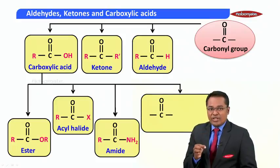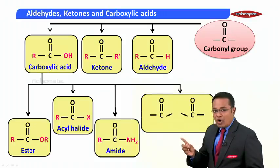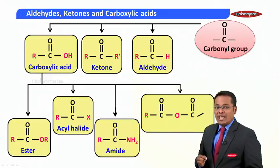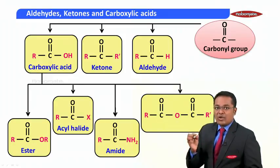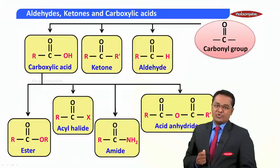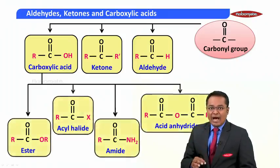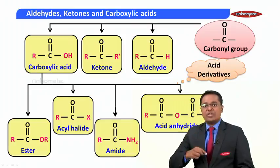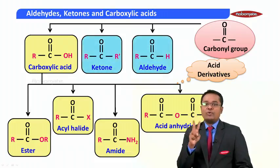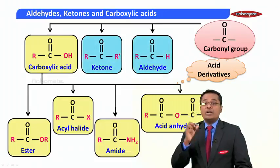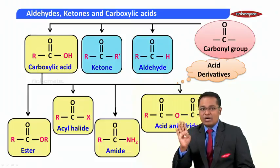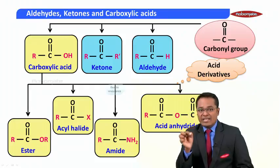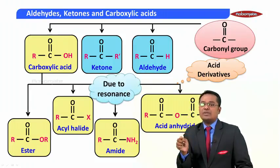Finally, there is a group with two carbonyl groups and one oxygen atom in between, with alkyl groups on either side that may be the same or different — these are called acid anhydrides. These last four compounds are acid derivatives. Out of the seven compounds discussed, only the first two are known as carbonyl compounds. The remaining five are not true carbonyl compounds because, although they have a carbonyl group, they do not behave as one due to resonance, which we will discuss later.